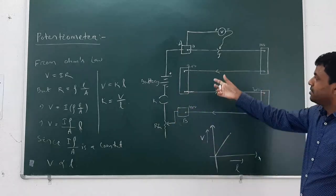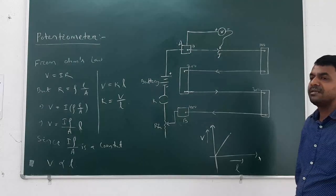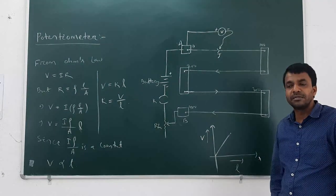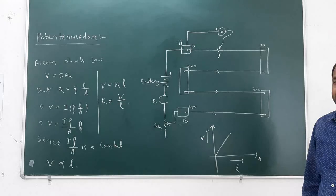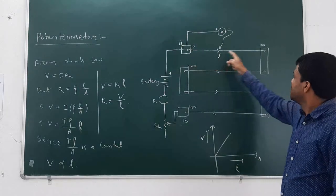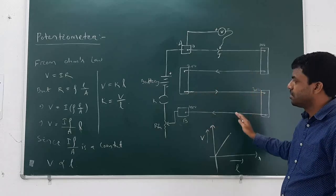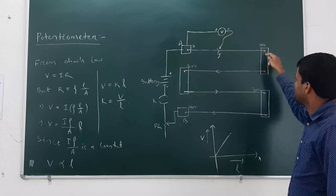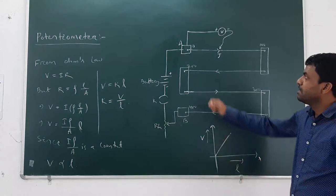Here I have drawn a schematic diagram of the potentiometer. Generally, the length of the wire used in the potentiometer is minimum 4 meters, maximum 10 meters. I have taken 4 meters here — that is 100 centimeters, another 100, another 100, and another 100 — 400 centimeters means 4 meters. Four wires are connected by copper strip connectors, totally fixed on a wooden block.